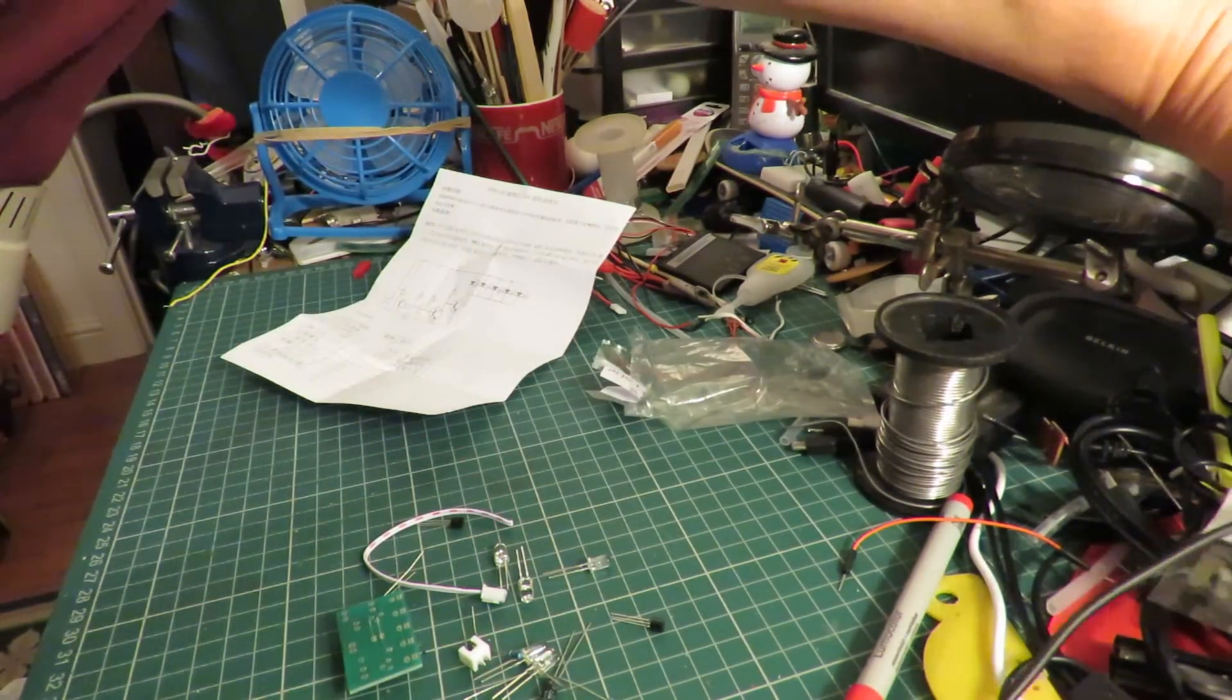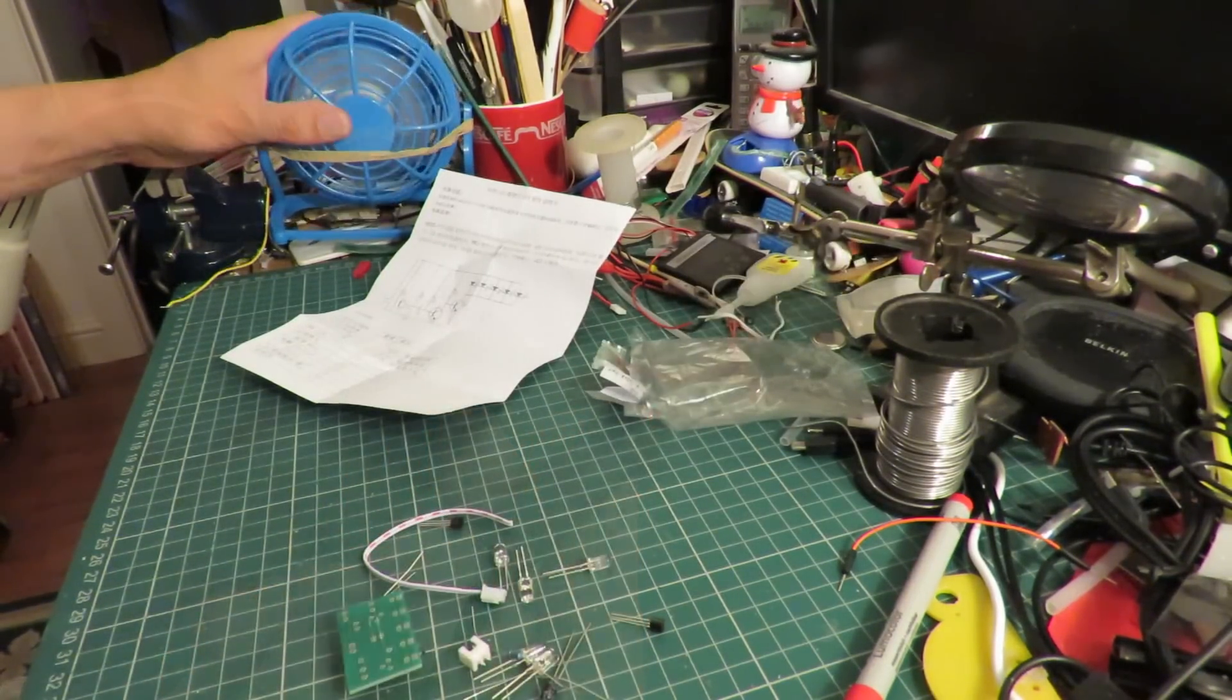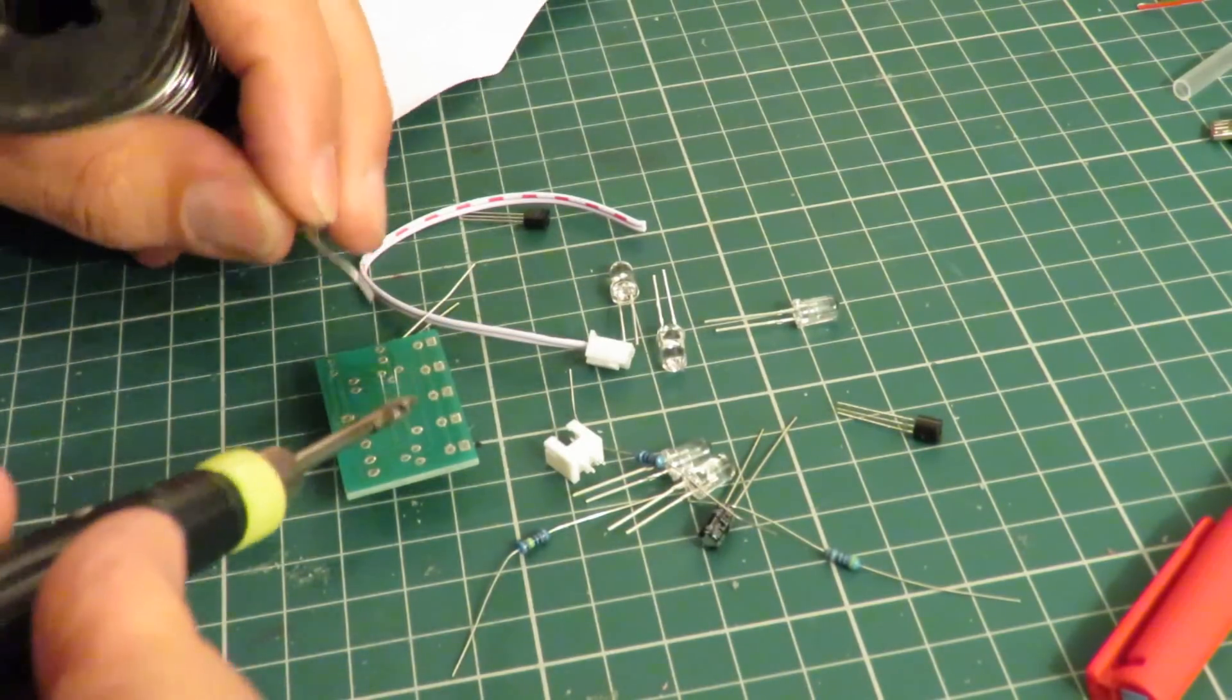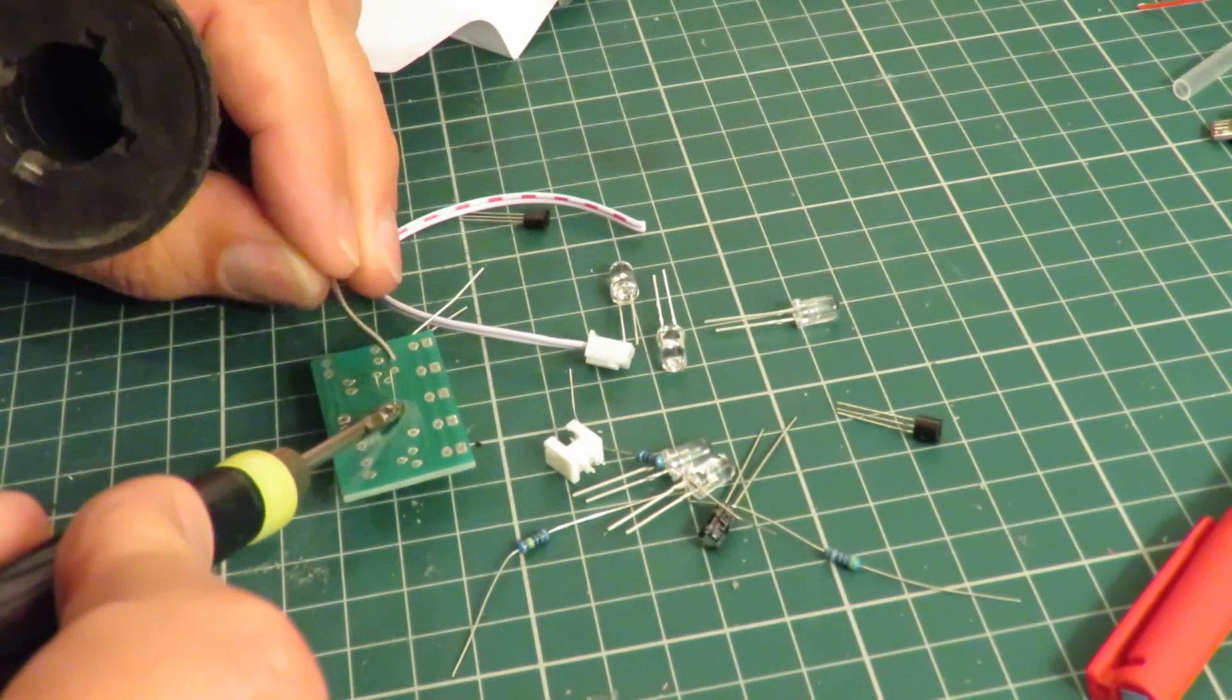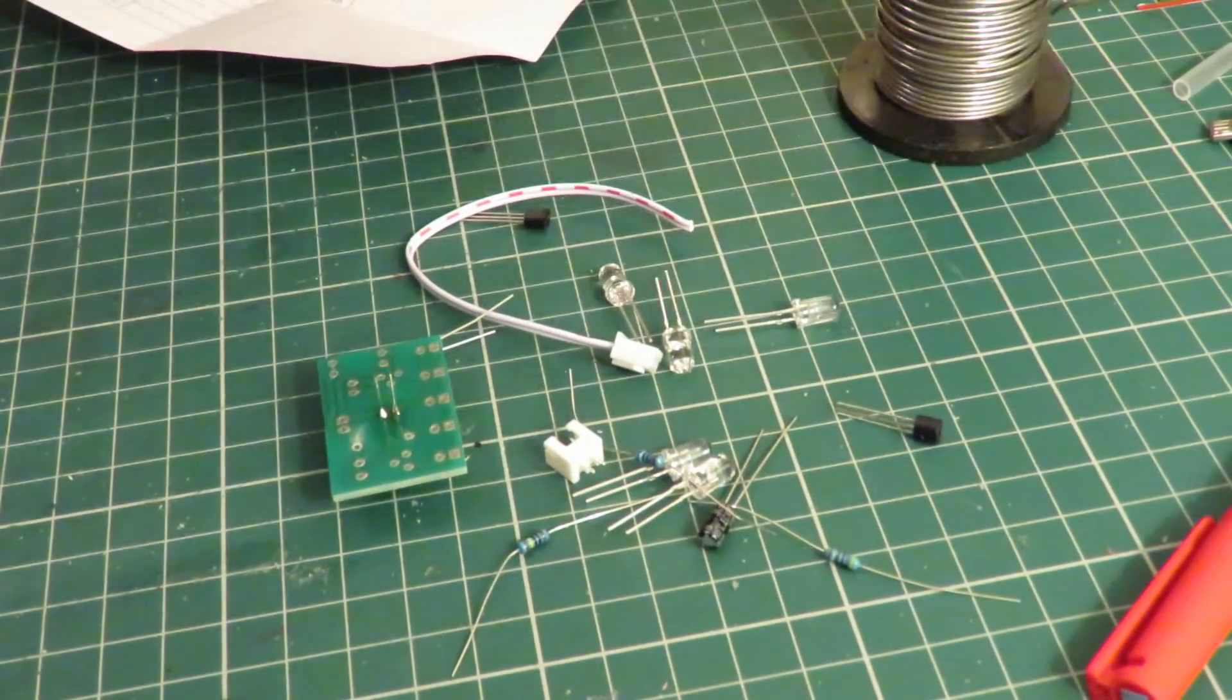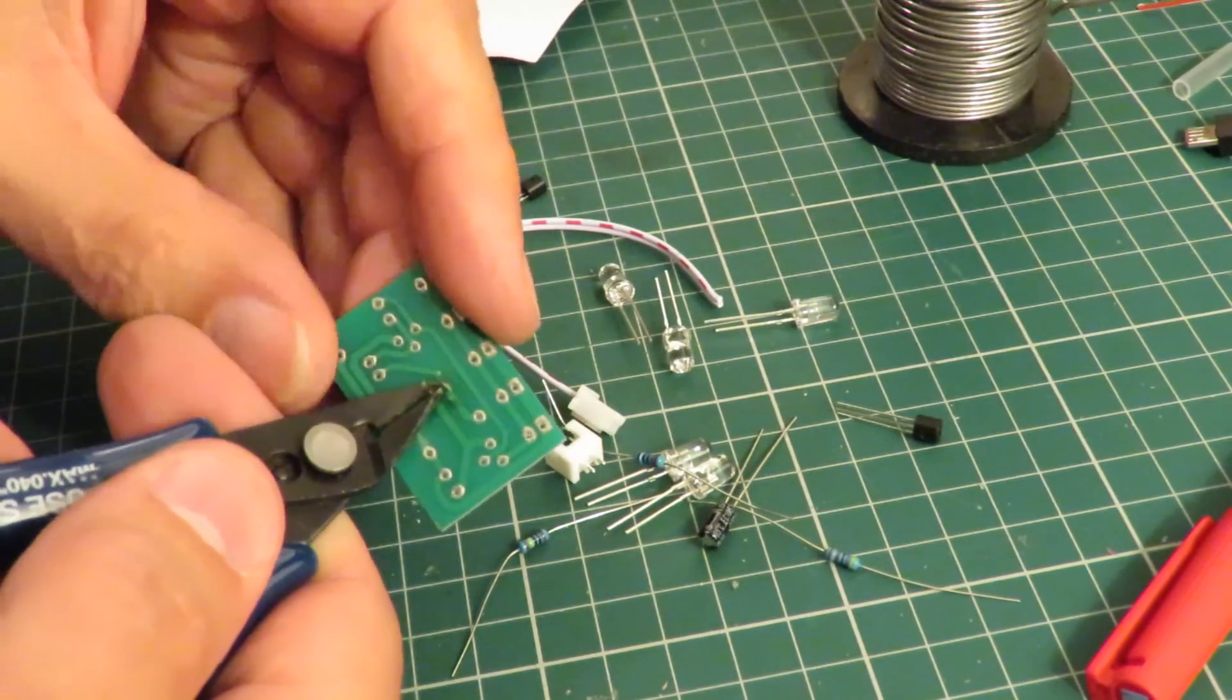Soldering iron, we'll use the USB soldering iron again. This one, turn the fan on to blow the fumes away. Let's go for it. And my nice cutters that I bought on eBay. All the links will be in the video description.